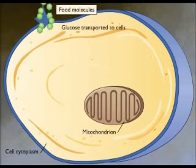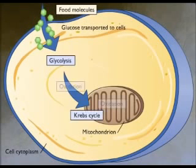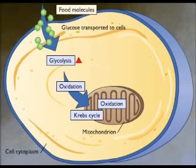Cells obtain energy during cellular respiration by oxidizing food molecules such as glucose. The energy derived from these oxidation reactions is used to form ATP.